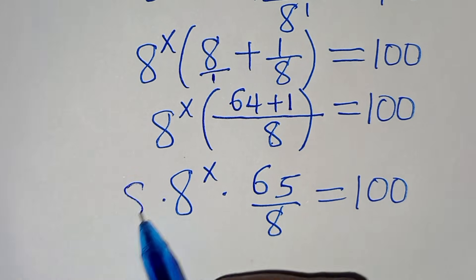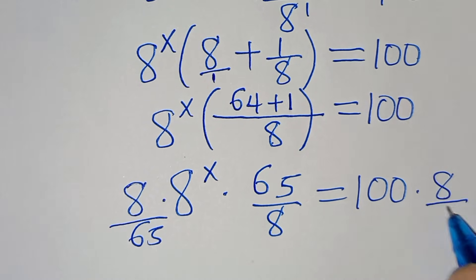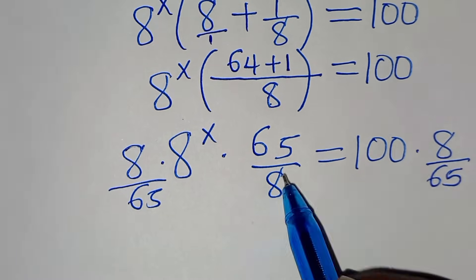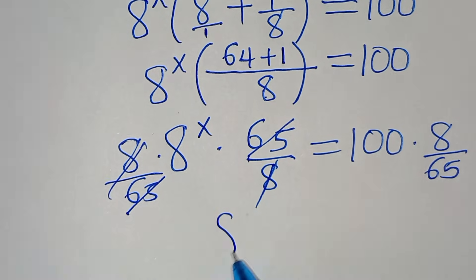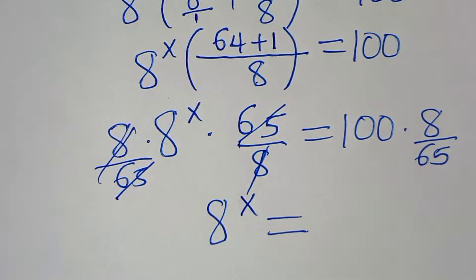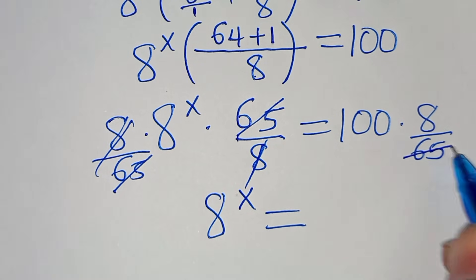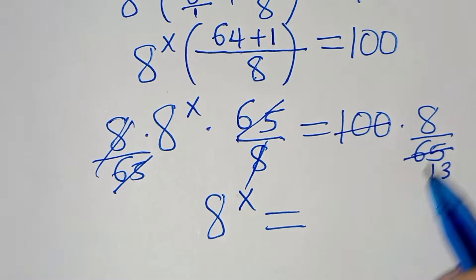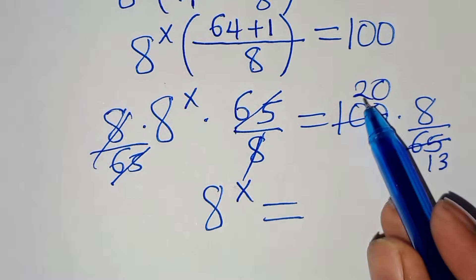Multiply both sides by 8/65. The 8s simplify and the 65s simplify, giving 8^x equals 100 times 8 divided by 65. Simplifying: 100/5 = 20 and 65/5 = 13, so 8^x equals 160/13.